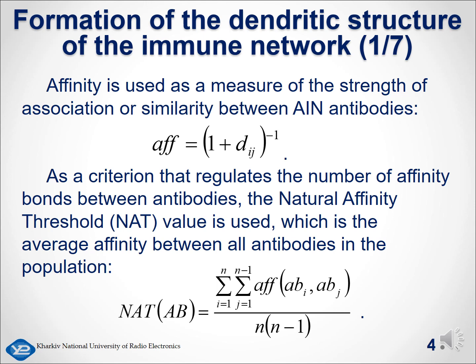In the theory of artificial immune systems, the concept of affinity is used to measure the strength of the connection or similarity between the antibodies of the artificial immune network, shown on the slide, where D is the Euclidean or Manhattan distance between the features of the i-th and j-th immune objects. As a criterion that regulates the number of affinity bonds between antibodies, the natural affinity threshold (NAT) is used, which is the average affinity between all antibodies in the population.